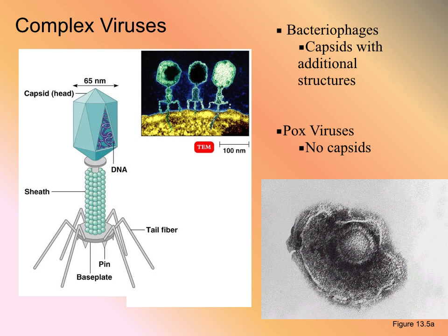Bacteriophages, also known as complex viruses, are capsids that have additional structures. Bacteriophages are not enveloped. The capsid is attached to a sheath, a base plate with pins, and tail fibers. The tail fibers work kind of like viral spikes — they attach to the outside of the bacterial cell, and when attached correctly, they bend. Those tail fibers bend and push down the base plate and pins. The bacteriophage releases lysozyme to weaken the cell wall, the pins cause penetration across the cell wall, the sheath punctures the cell wall, and the genetic material is injected into the cell — kind of like a hypodermic needle.